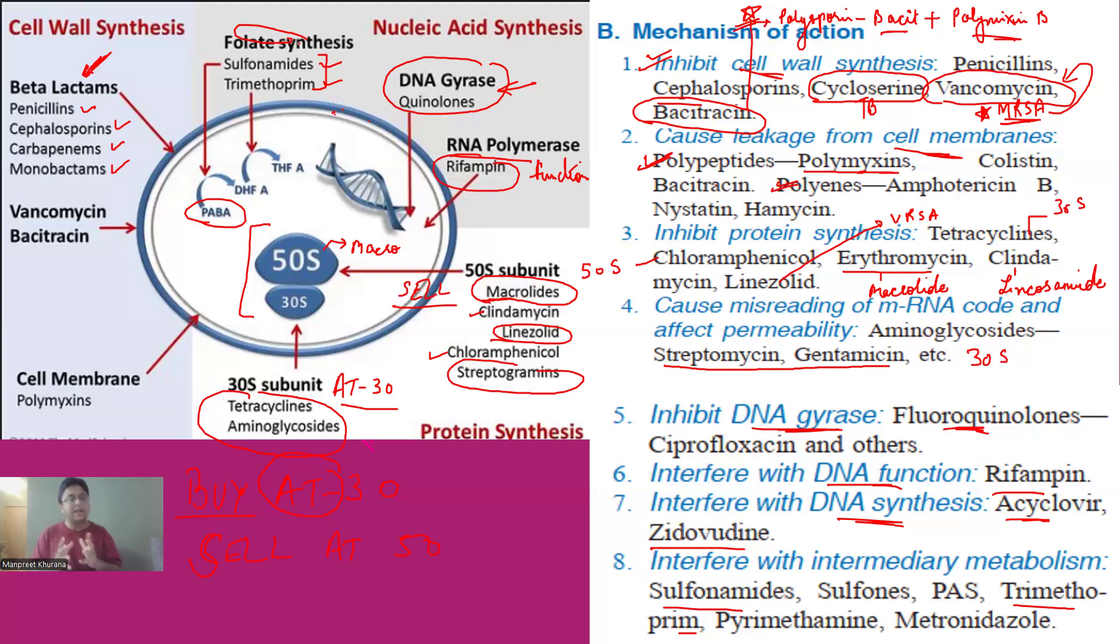Then some antibiotics acting on the DNA function, which can be the DNA gyrase, that fluoroquinolones, RNA polymerase or DNA function, rifampin. And then we have the DNA synthesis, acyclovir and zidovudine. Then drugs acting on folate synthesis are sulfonamides and trimethoprim. Thank you and have a wonderful day. Bye.